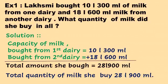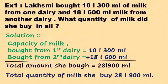First example: Lakshmi bought 10 liters 300 milliliters of milk from one dairy and 18 liters 600 milliliters from another dairy. What quantity of milk did she buy in all? She bought some amount from each dairy, and we need to find the total. From the keyword 'in all,' we understand this is an addition problem.